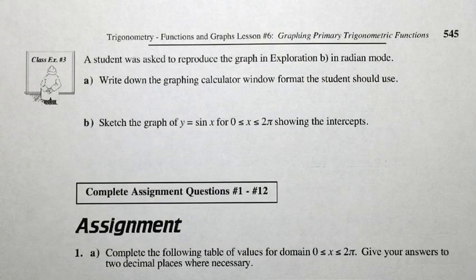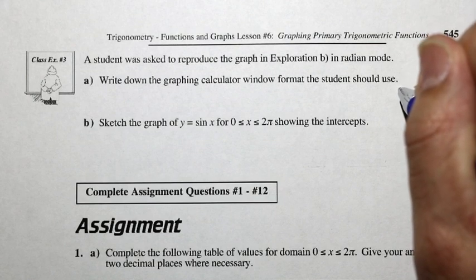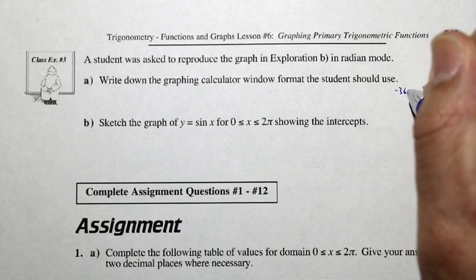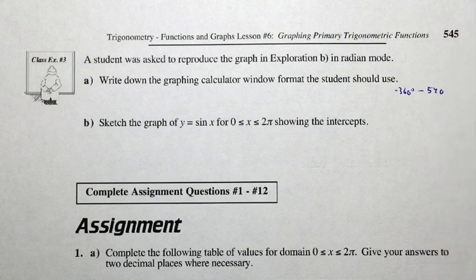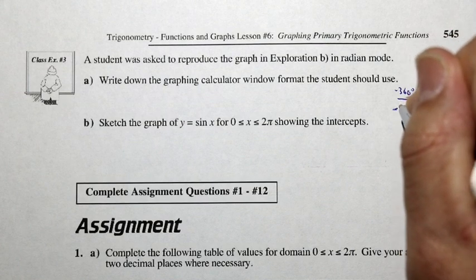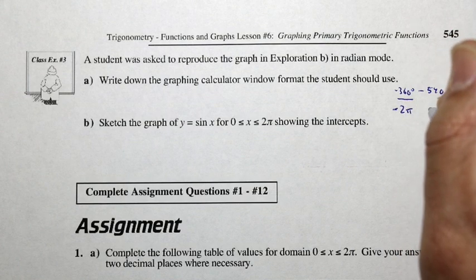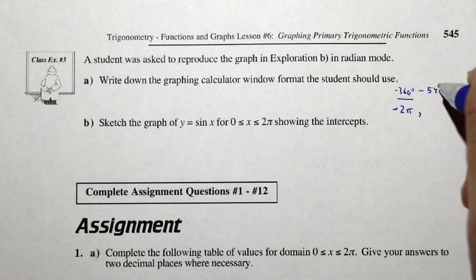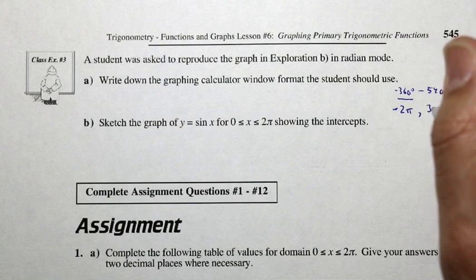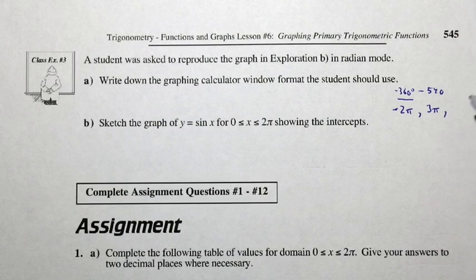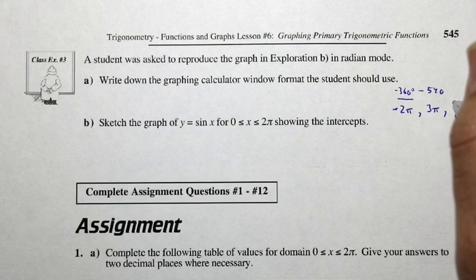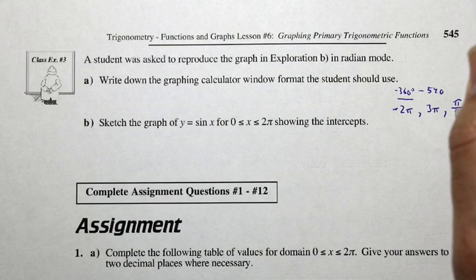So let's take a look at class example 3. A student was asked to reproduce the graph in exploration B in radian mode. So what kind of graphing calculator window format would we use? Well, remember that we went from negative 360 degrees to 540, so we have to convert 360 degrees to radian. So we can say this is negative 2 pi, and then it goes all the way to 540 is 180 times 3, right? So this goes all the way to 3 pi. And remember in degrees it went by 30 degrees, but in radians we would have to say pi over 6.